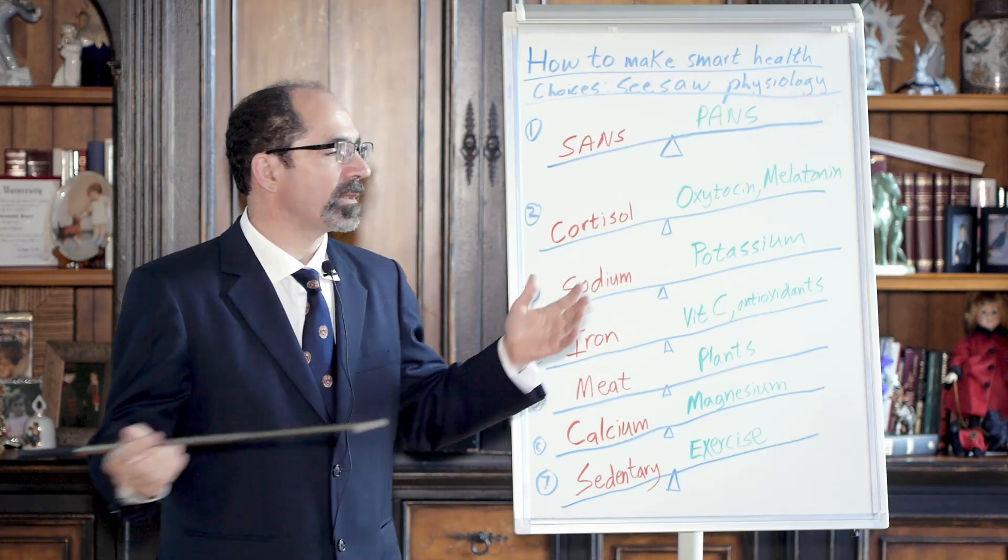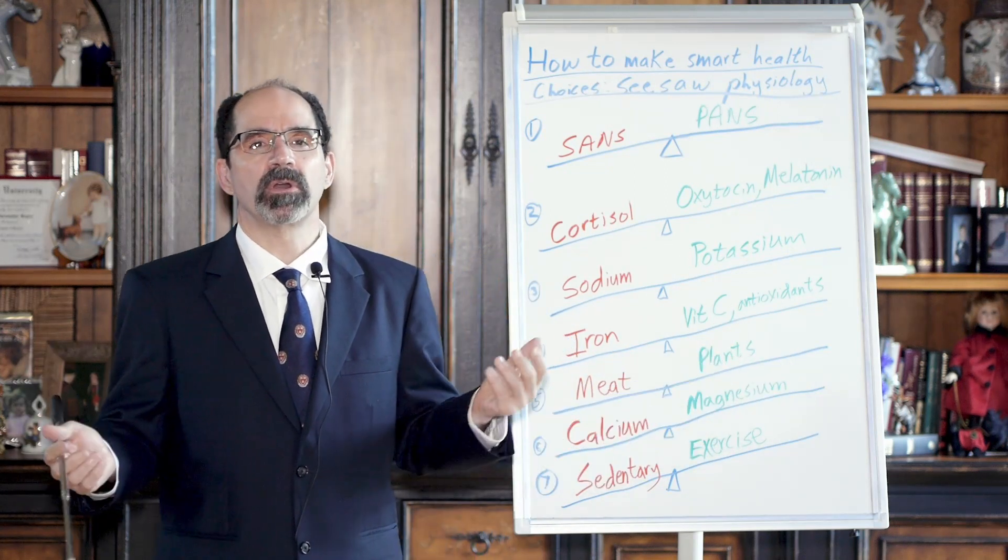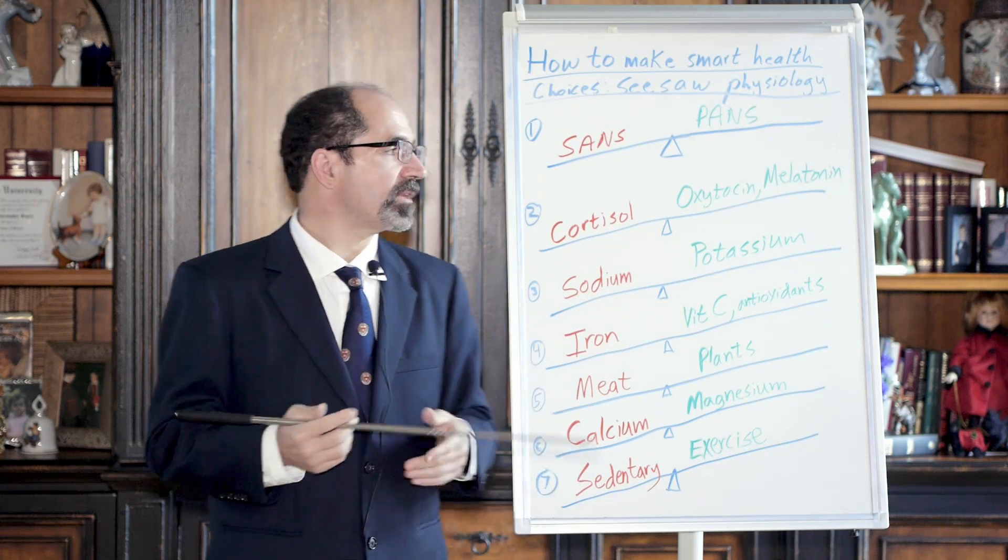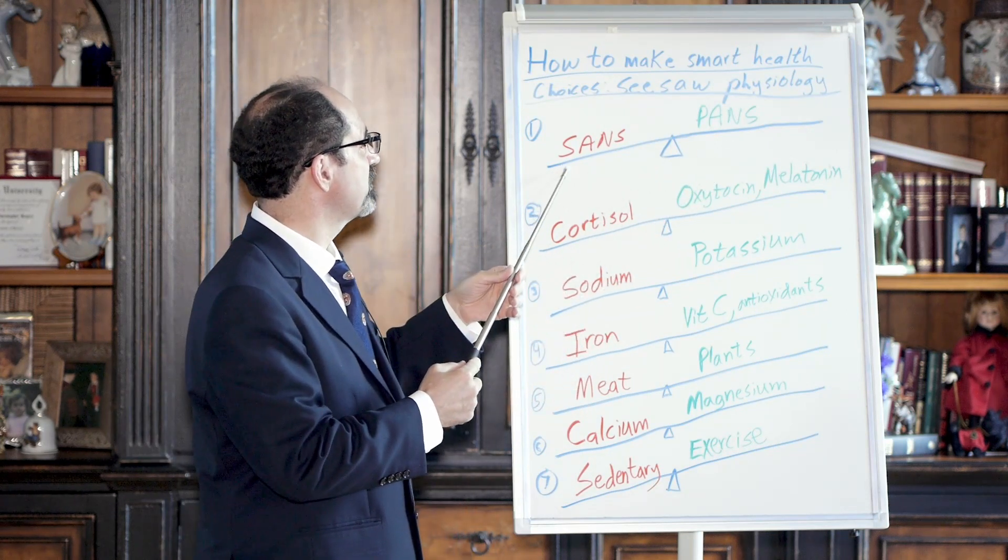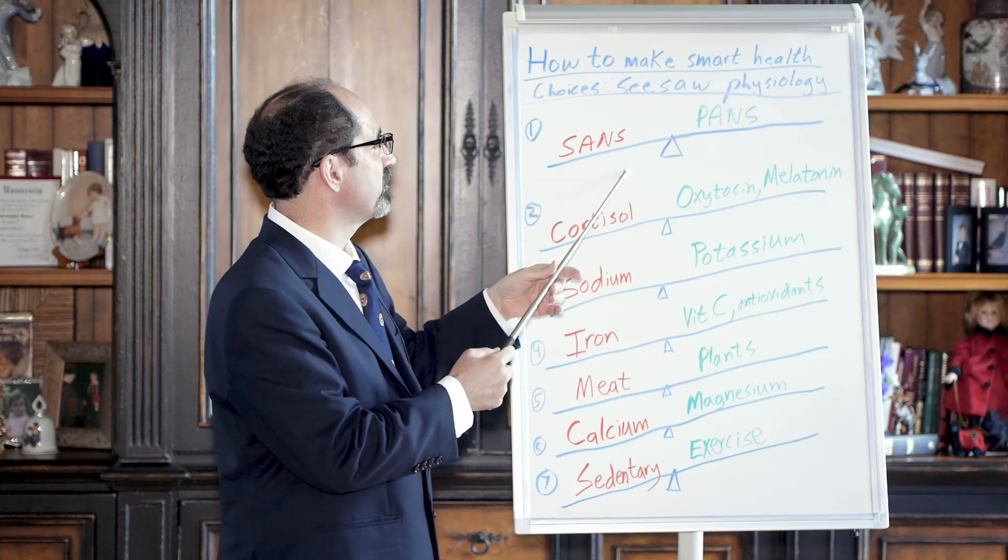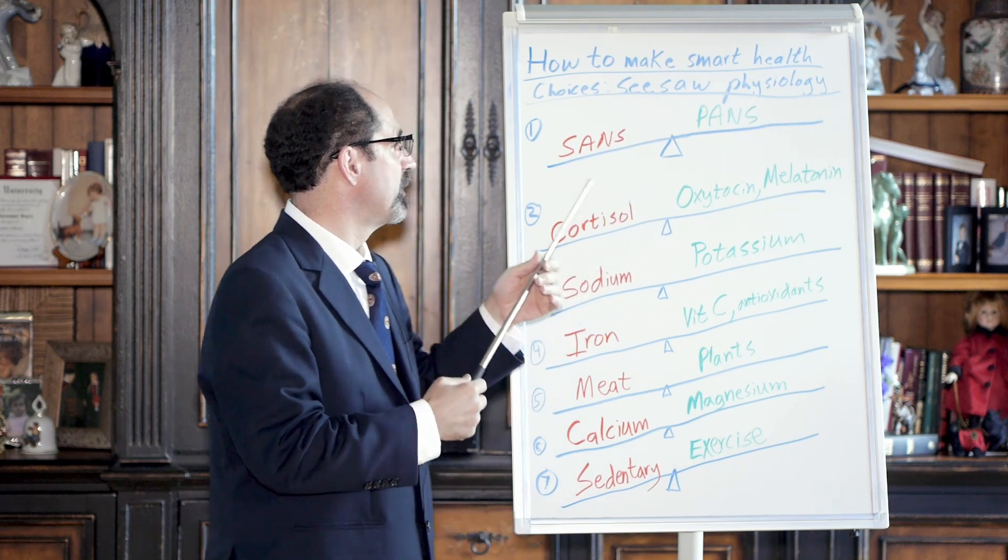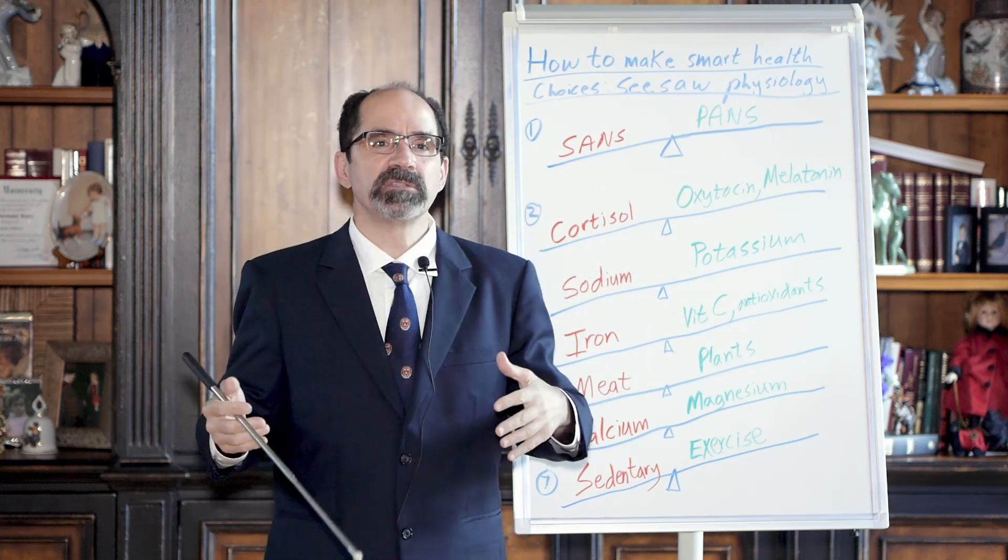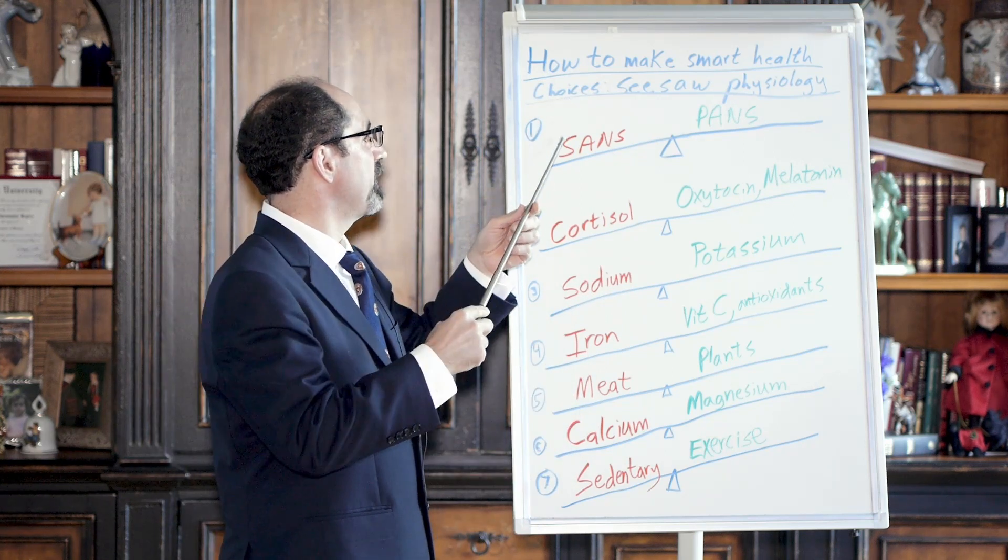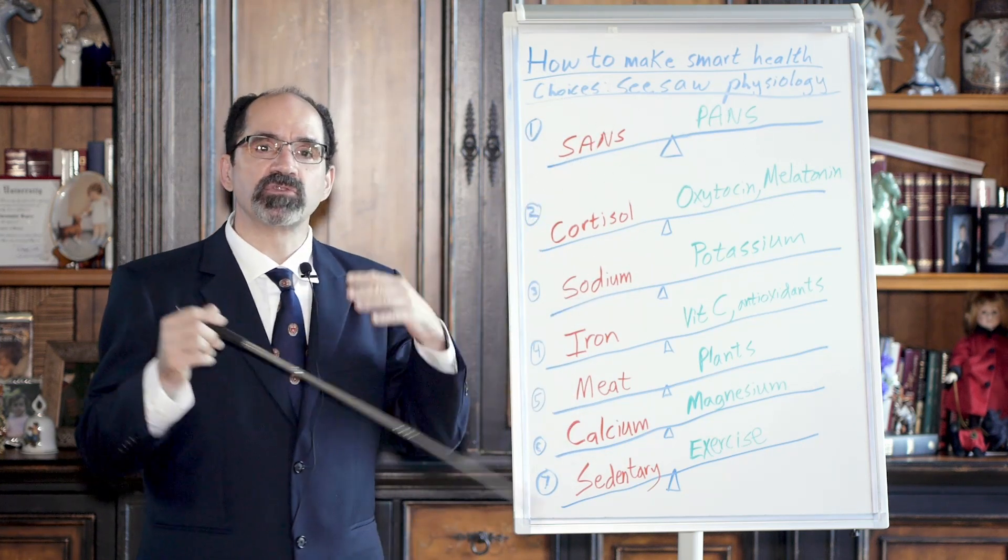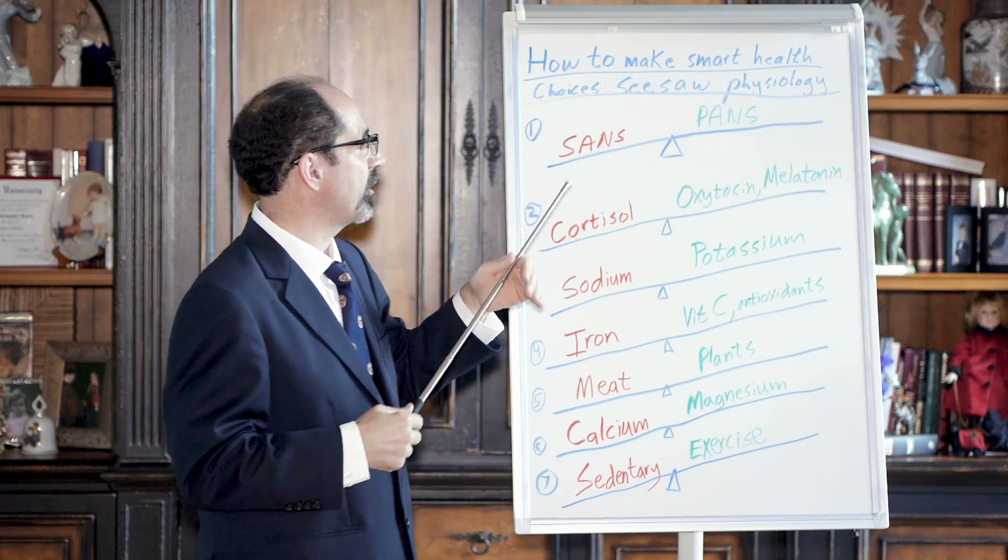First of all, the great seesaw in our health is what you would call the yin and yang of our health: SANS and PANS. SANS stands for sympathetic autonomic nervous system. PANS stands for parasympathetic autonomic nervous system. So SANS is basically being alert, attention. And at a maximal level, SANS would be like S for stress, the stress response. That would be maximum high level SANS, sympathetic autonomic nervous system.